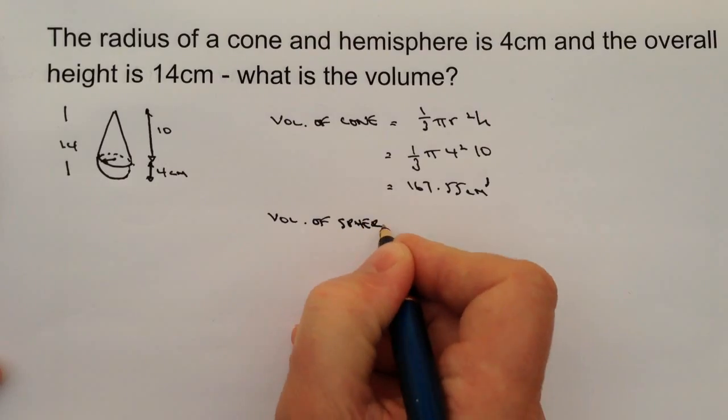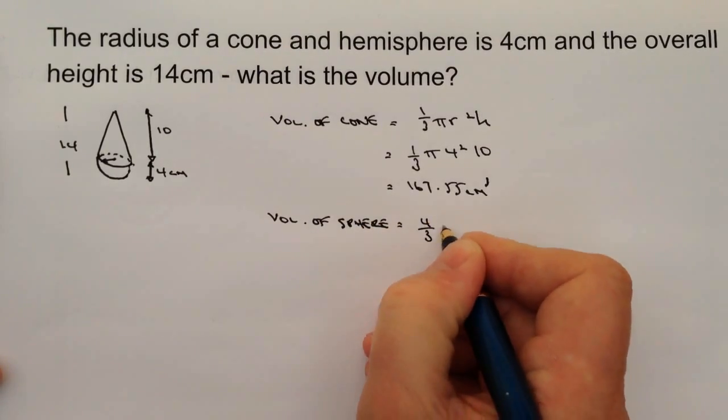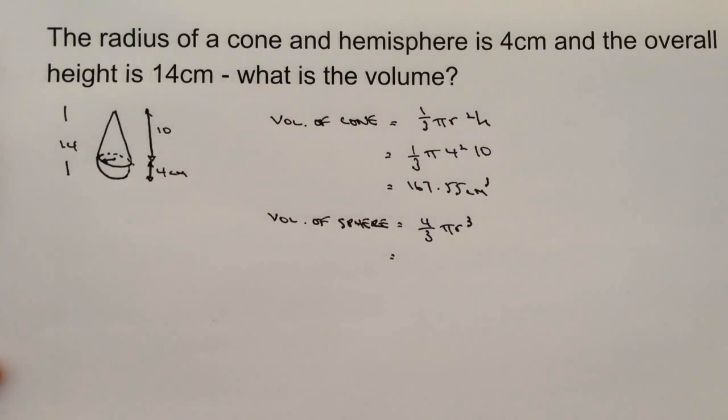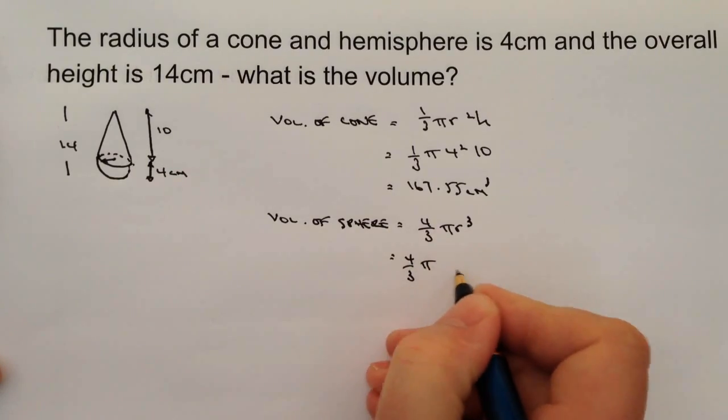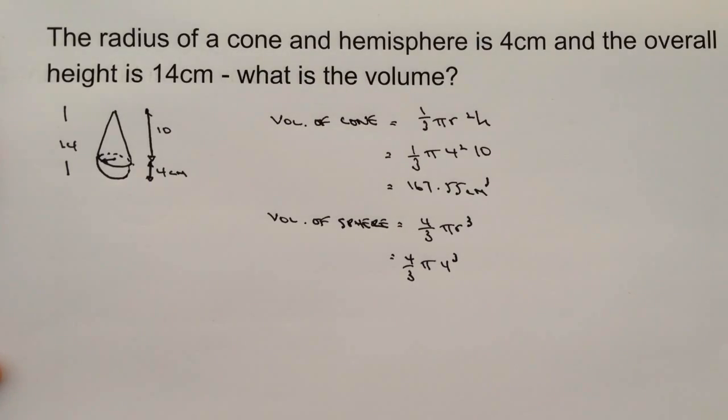Okay, and that is again you'll find this on your formula sheet which is 4 thirds pi r cubed. Okay, so I'll put the numbers into that and I end up with 4 thirds times pi and again 4 for the radius but cubed this time.